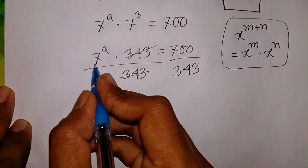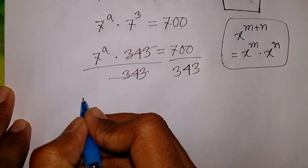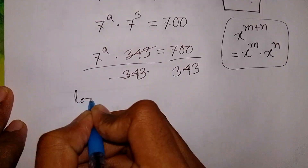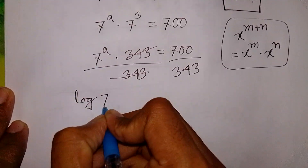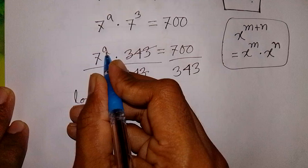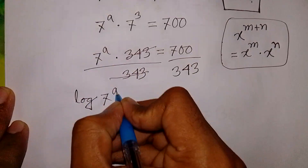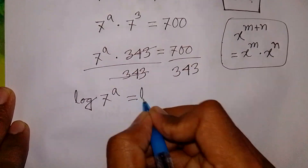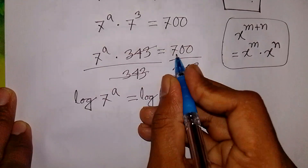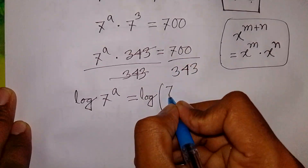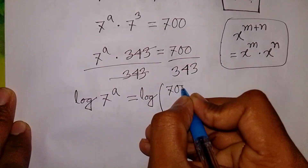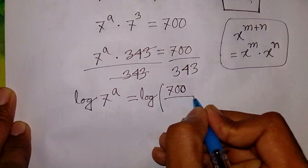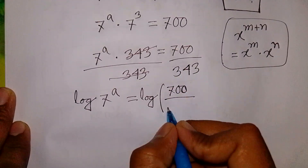Here, we apply log to both sides. So it will be log of 7 to the power a is equal to log of 700 over 343.